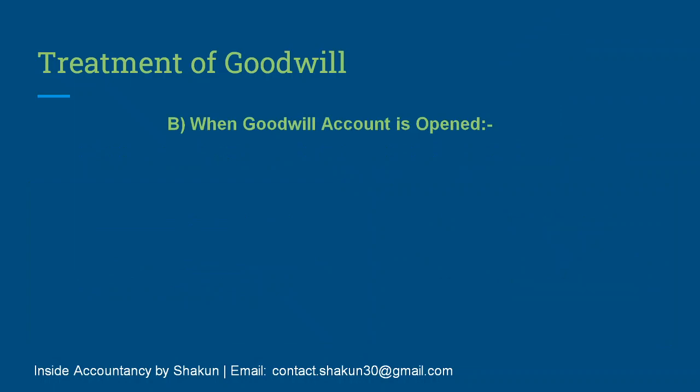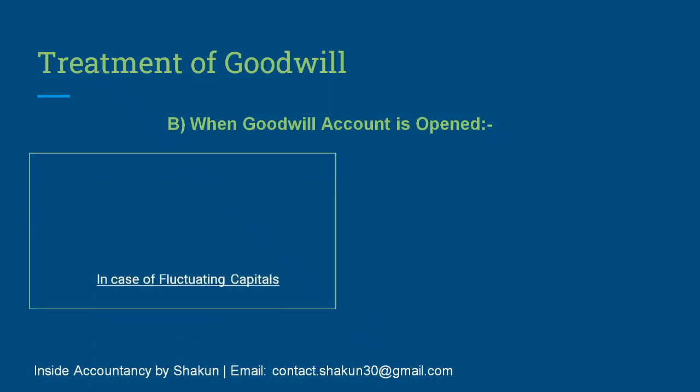The next method for the treatment of goodwill is when the goodwill account is opened. You know that according to AS 26, goodwill cannot be raised in the books when consideration has not been paid for it. In this method, we are going to raise the goodwill first and then write it off. The reason is that when we raise the goodwill we raise it in the old ratio, and when we write it off we write it off in the new ratio. So ultimately the net effect remains the same — the gaining partner is debited and the sacrificing partner is credited.